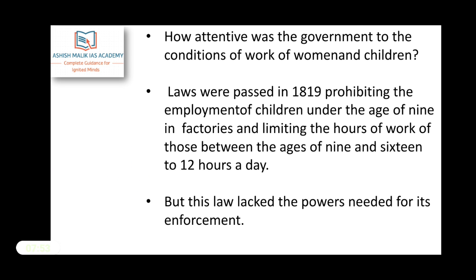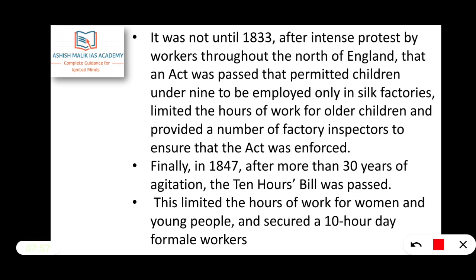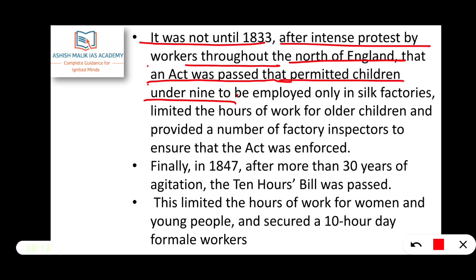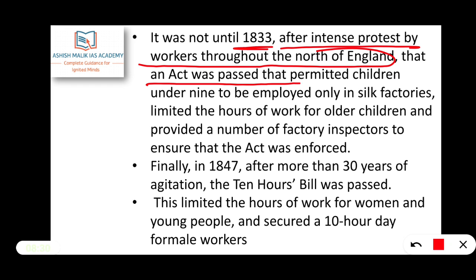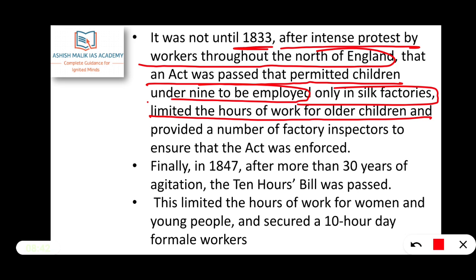It was not until 1833, after intense protest by workers throughout the north of England, that an act was passed. This act permitted children under 9 to be employed only in silk factories, limited the working hours of older children, and provided a number of factory inspectors to ensure the act was enforced by inspectors and managers at the factory level.